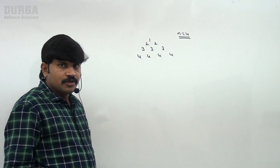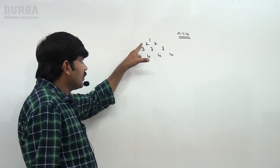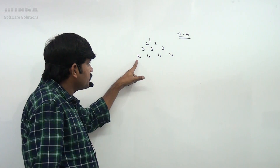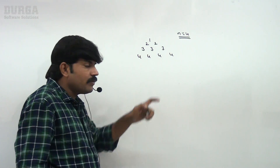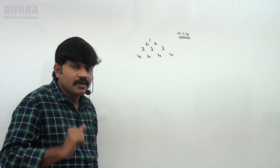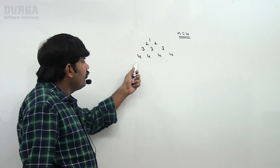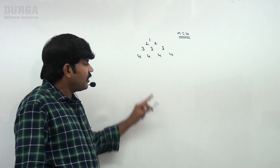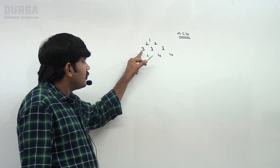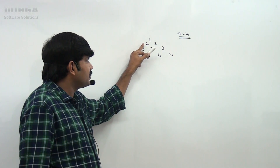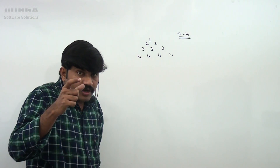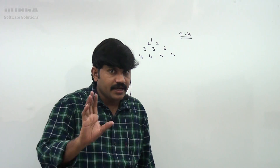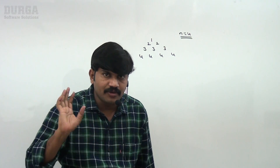This is the pyramid I want. Observe: within each row, the same symbol is used. In the fourth row only 4, in the third row only 3, in the second row only 2. So inside a row the symbol is not changing — that's why a nested loop is not required.